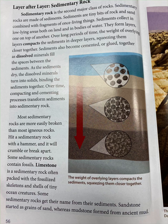Sedimentary rock is the second major class of rocks. Sedimentary rocks are made of sediments — tiny bits of rock and sand combined with fragments of once-living things. Sediments collect in low-lying areas both on land and in bodies of water, forming layers one on top of another.